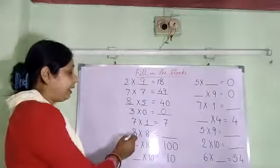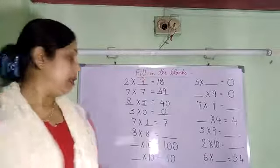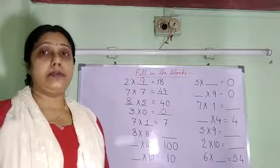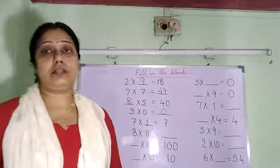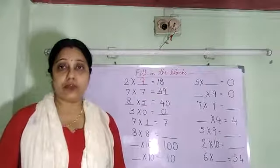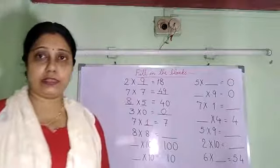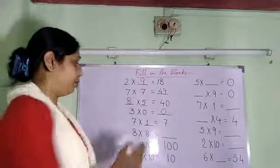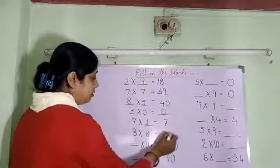Next, 8 multiplied by 8. So we have to read the table of 8 until 8 8s is reached: 8 1s are 8, 8 2s are 16, 8 3s are 24, 8 4s are 32, 8 5s are 40, 8 6s are 48, 8 7s are 56, 8 8s are 64. So we will write here 8 8s are 64.